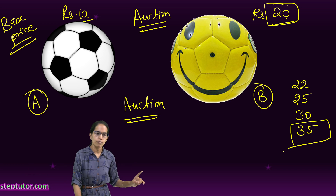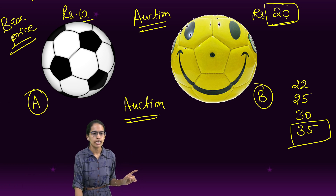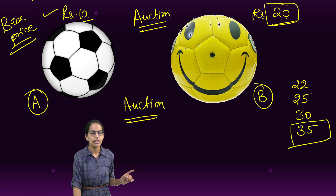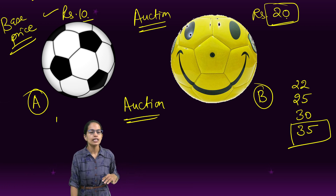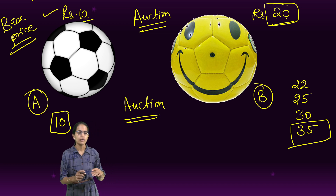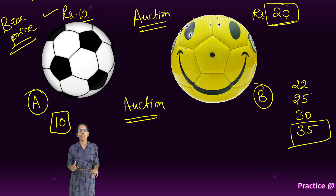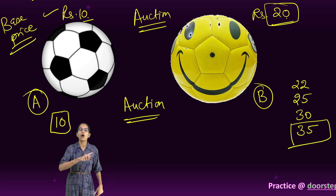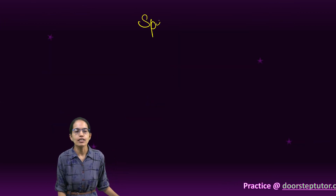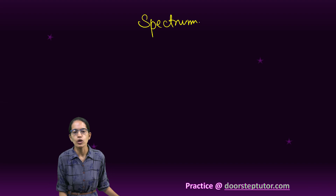For ball A, the base price was 10 rupees and it was finally sold at 10 rupees. For ball B, the base price was 20 rupees but it was finally sold at 35 rupees. This is what we call an auction system. Now that we understand the auction, let's understand what spectrum auction is.